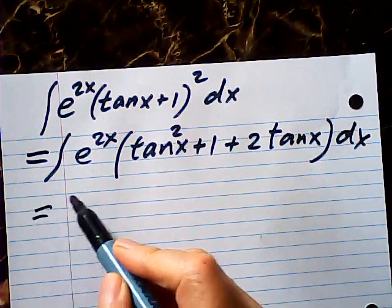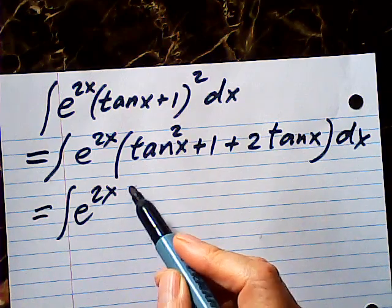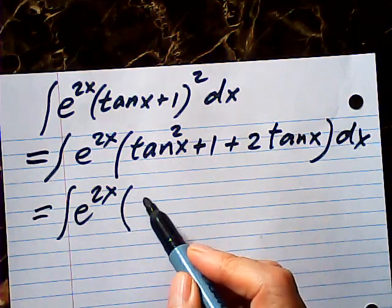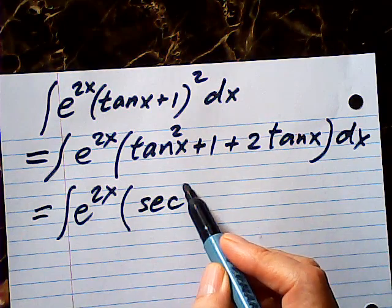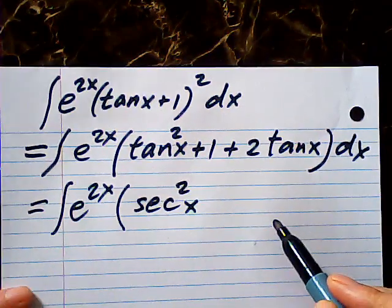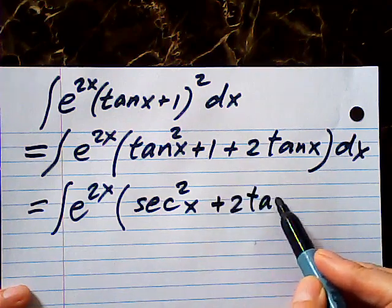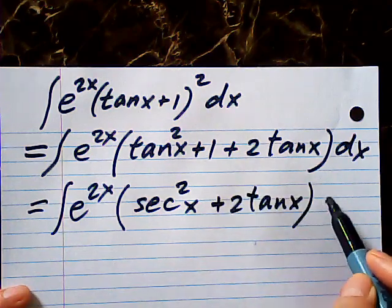Now then, this is equal to tangent square plus 1 is a secant square, and plus 2 tangent x dx.